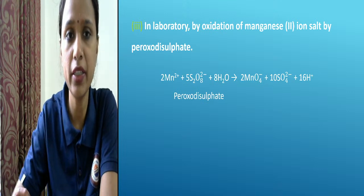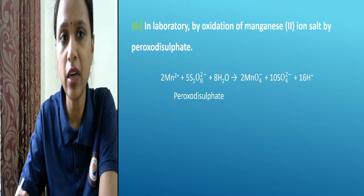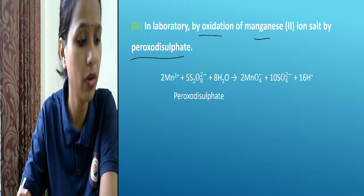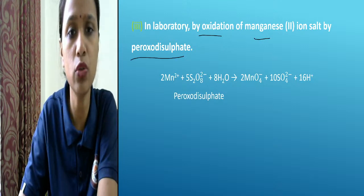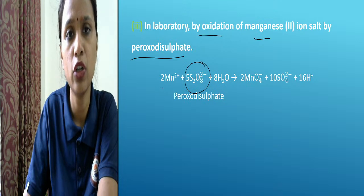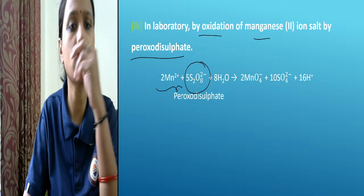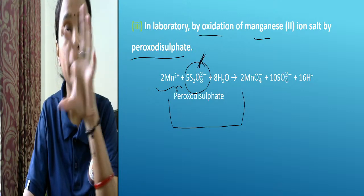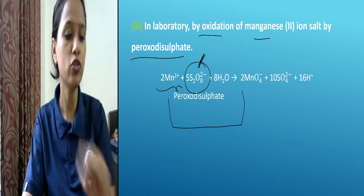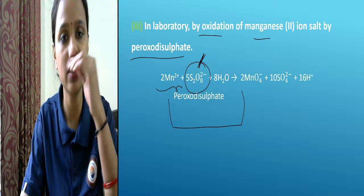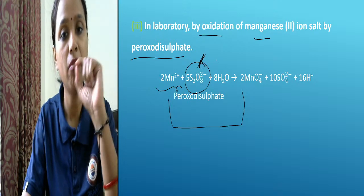In the laboratory method, we can prepare potassium permanganate by oxidation of manganese salt by peroxide. Manganese(II) — which is +2 oxidation state — can be easily converted to permanganate by peroxodisulfate treatment. You can look up these reactions. These reactions are limited but you have to learn them and balance them, because half marks are for balancing.